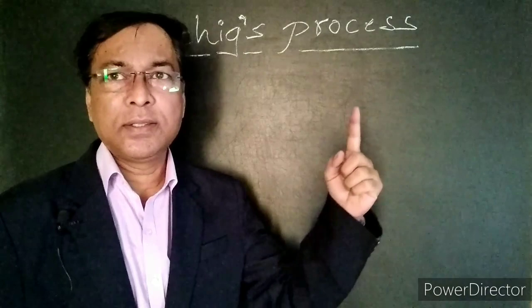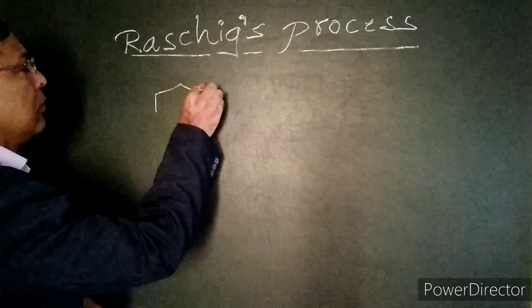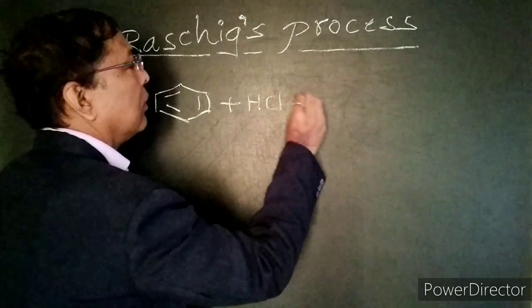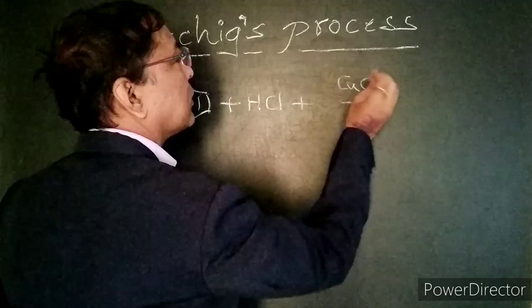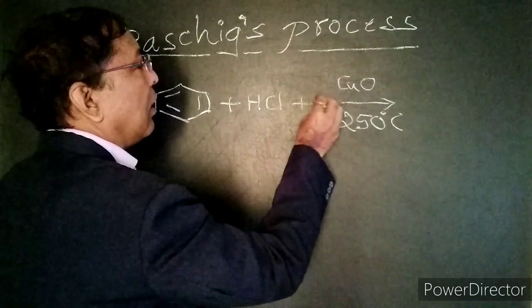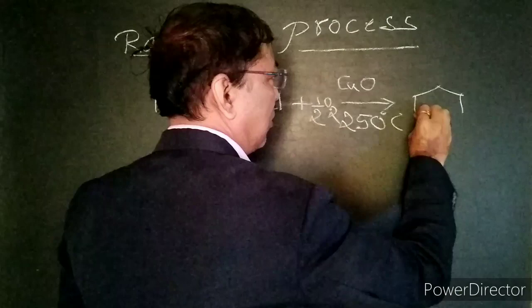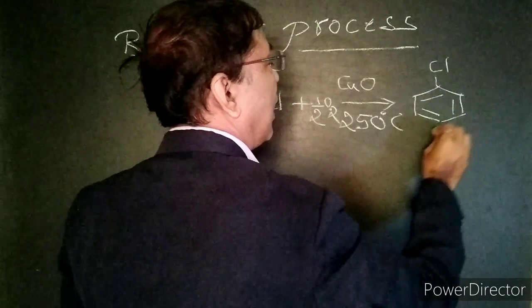Rasig's process: In this process, benzene is heated with concentrated HCl in the presence of cuprous oxide at 250 degrees Celsius. Oxygen is generated — that is half O₂ — and we get chlorobenzene and water.